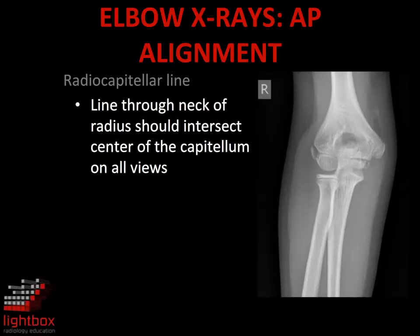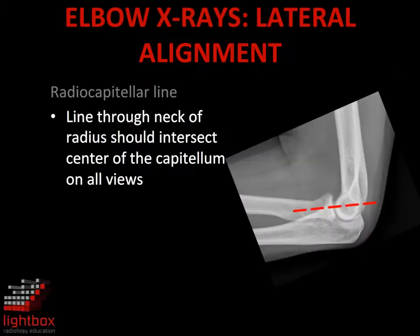As with interpretation of any extremity x-ray, we will firstly review normal alignment. If a line is drawn through the neck and head of the radius, this should bisect the capitellum on all views. This is the radiocapitellar line on the AP projection, and this is the radiocapitellar line on the lateral projection.